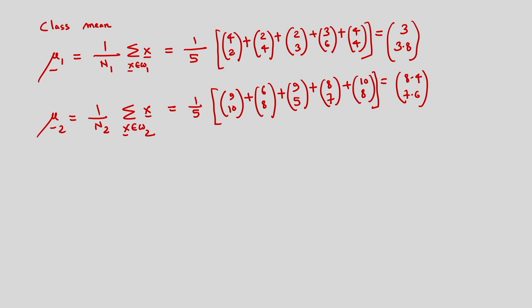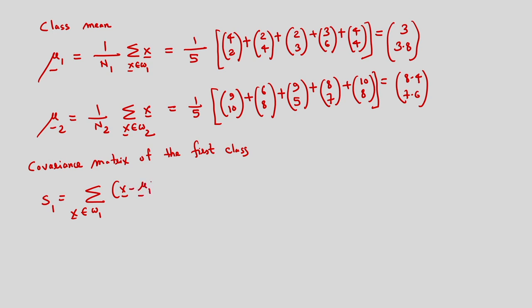After determining the means we can determine the covariance matrix of the first class. The covariance matrix S1 is the summation of (x minus mu1)(x minus mu1) transpose, for x belonging to class omega 1. This is the covariance matrix.